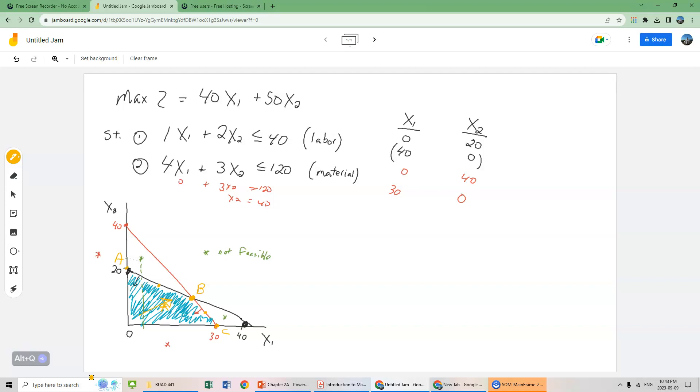So what we can do is for each of these points, let's go black here because it's more visible. Each of these points is going to have coordinates for x1 and x2, which then we can put back into the objective function and solve the answer. So at point A, it's clear that x1 equals 0, which is, if my memory serves me correct, x1 is the number of bowls.